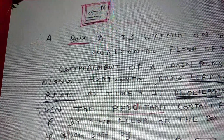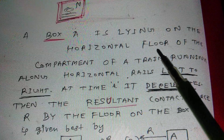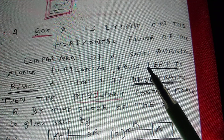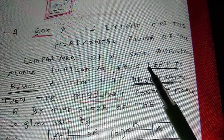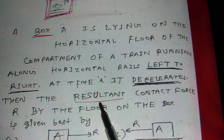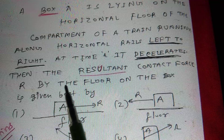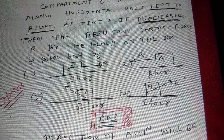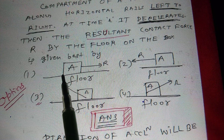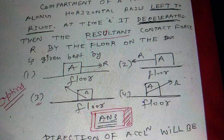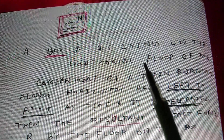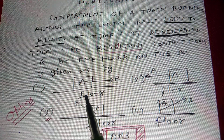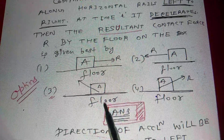Question: Box A is lying on the horizontal floor of the compartment of a train running along horizontal rails from left to right. At the time, it decelerates. The resultant contact force R by the floor on the box is given by which option? This is the floor, and the compartment of the train has a box A kept on it. We are interested to find the direction of the resultant contact force.